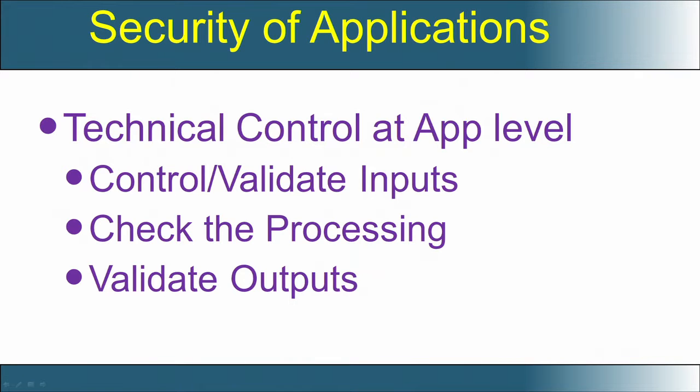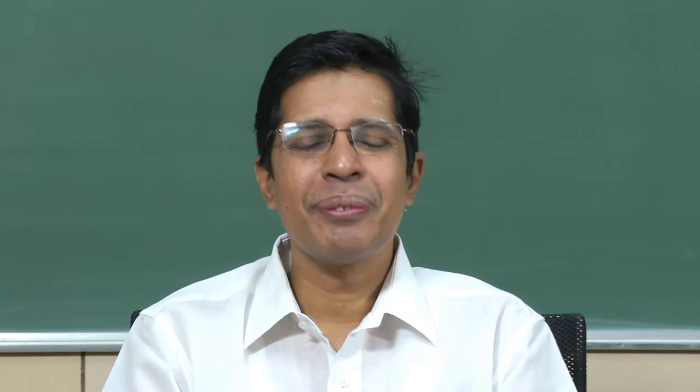What is an application? An application is a software, but it can also be a process — a policy or procedure followed by an organization. Considering an application as a software, this software can be purchased commercially off the shelf. From such software, we can do three things: control the input, control the output, and instrument and control the processing.